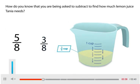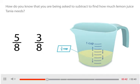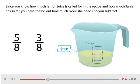How do you know that you are being asked to subtract to find how much lemon juice Tanya needs? Since you know how much lemon juice is called for in the recipe and how much Tanya has so far, you have to find out how much more she needs, so you subtract.